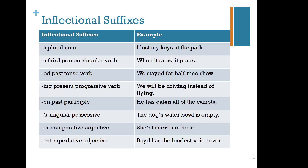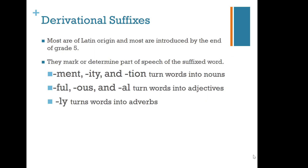An inflectional suffix is a suffix added to a word that keeps the same word class or part of speech. For example, 'key' becomes 'keys' — the -s is a plural noun marker. Other examples are the third person singular verb ending, the -ed past tense verb ending, the -ing progressive verb ending, the -en past participle, the apostrophe-s singular possessive, -er comparative adjective, and -est superlative adjective. Derivational suffixes, on the other hand, change the part of speech of a word and are mostly Latin in origin. Examples include -ment and -tion, which turn words into noun forms — think 'contentment' and 'ferocity.' The suffixes -ful, -ous, and -al turn words into adjectives — compare 'joy' (a noun) with 'joyous' (an adjective). And -ly, as in 'quickly,' turns a word into an adverb.